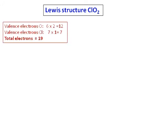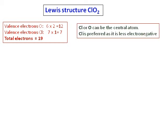Let's look at the Lewis structure of ClO2. ClO2 has a total of 19 valence electrons: 12 from oxygen and 7 from chlorine. It has an odd number of electrons. Cl is preferred as the central atom because less electronegative atoms are preferred as central atoms.